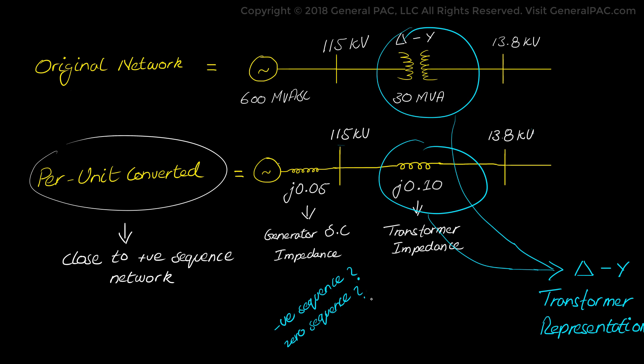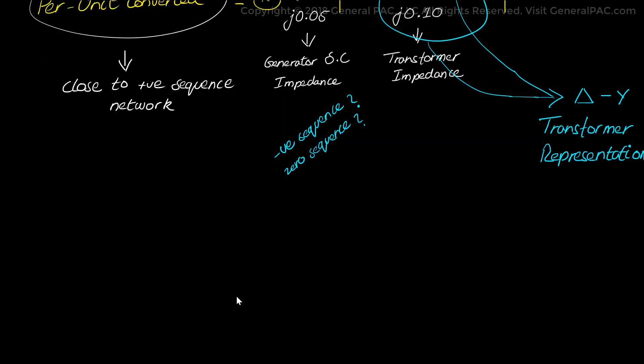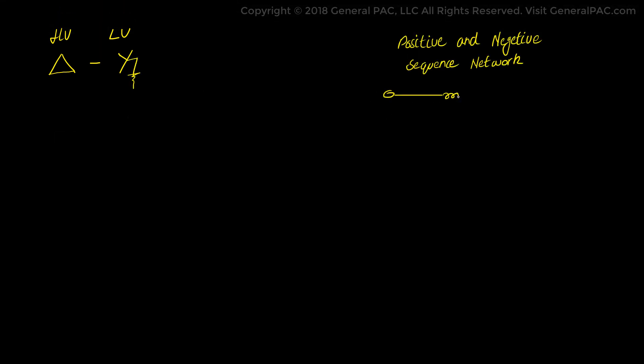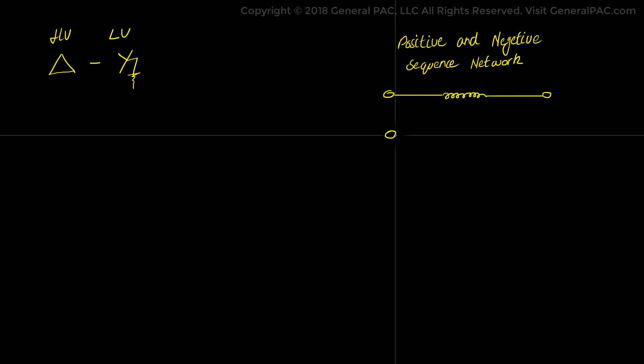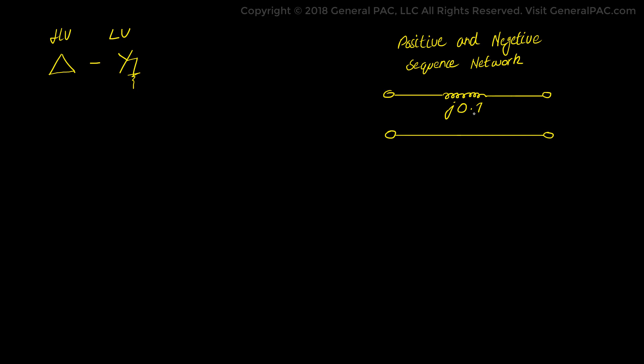Because the delta-Y transformer connection is the most complex part in the sequence network analysis, we are going to spend most of our time talking about that in this tutorial. If the transformer is a delta-Y transformer with the neutral of the Y side — the low voltage side — being solidly grounded, then the transformer's positive and negative sequence networks can just be represented by a single impedance. However, although this is very simple, the zero sequence network is different.